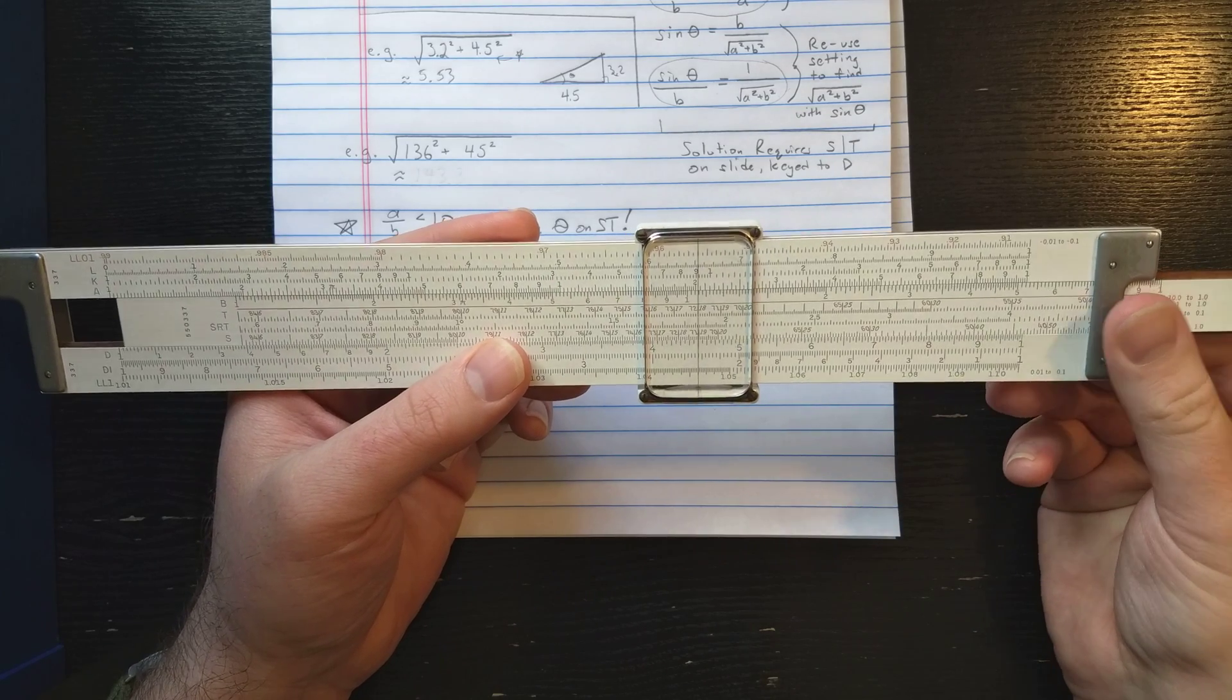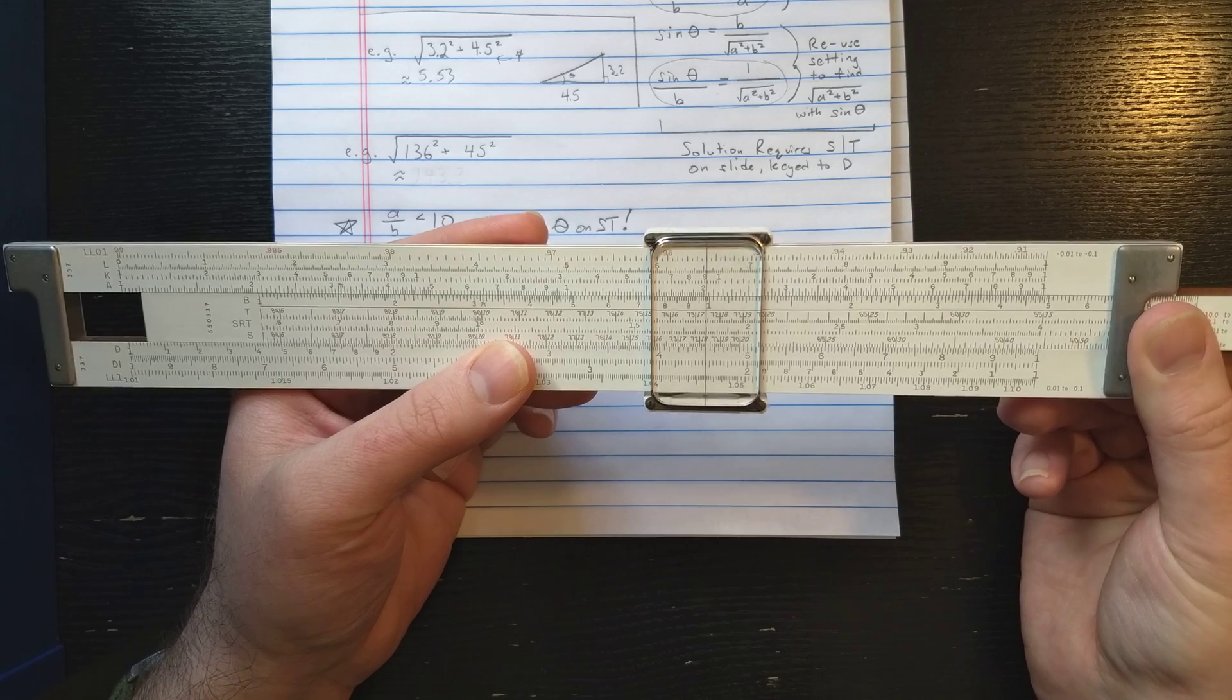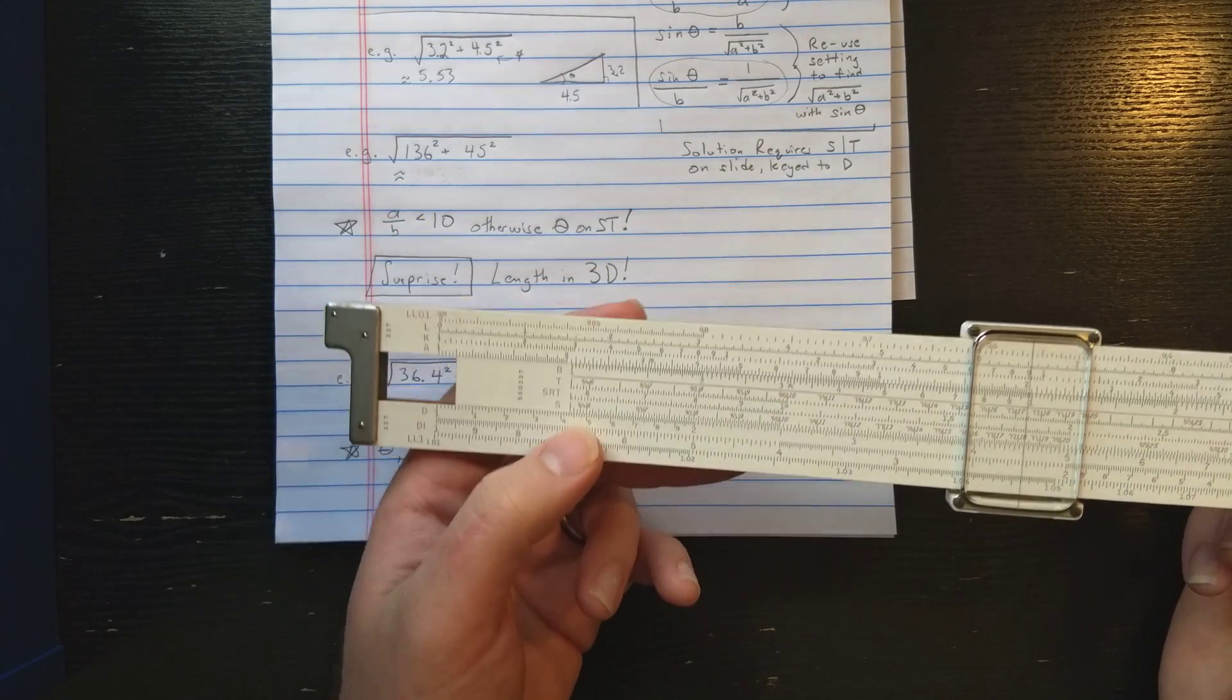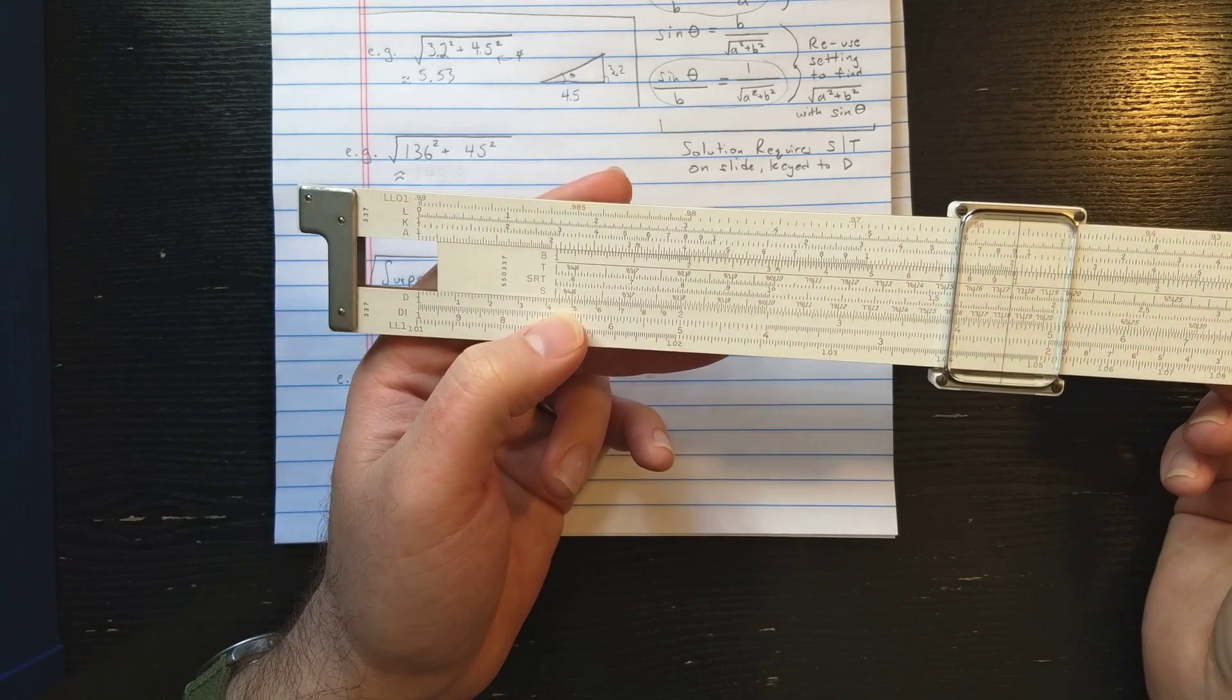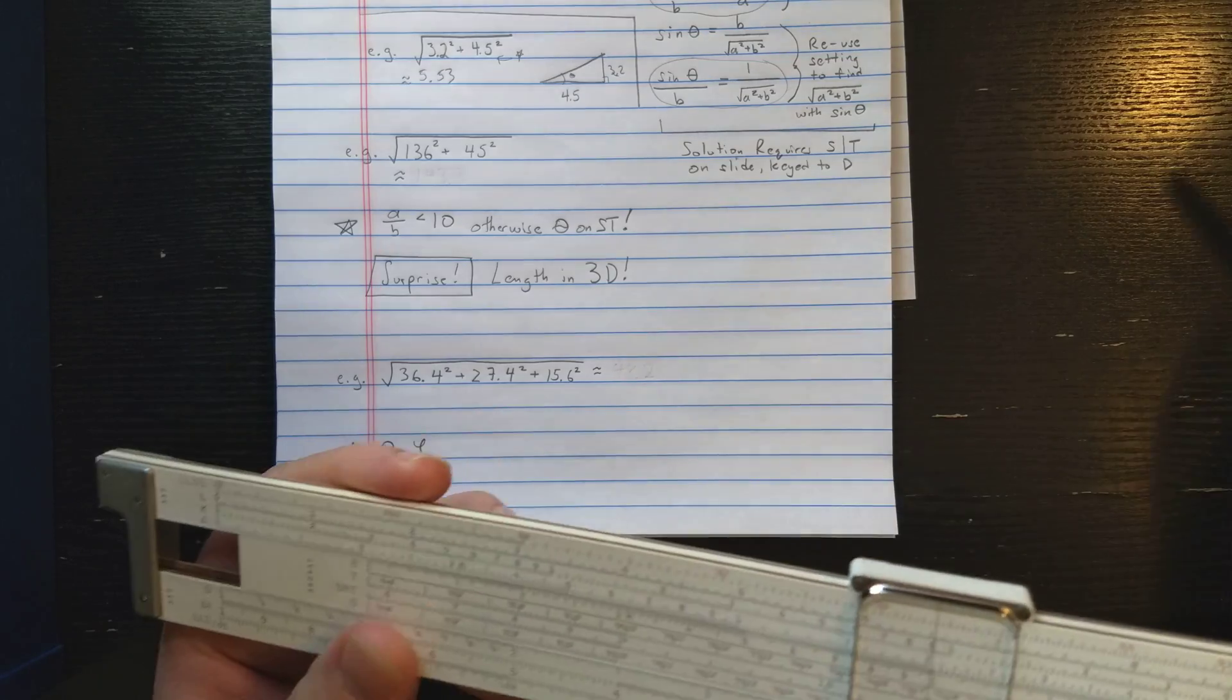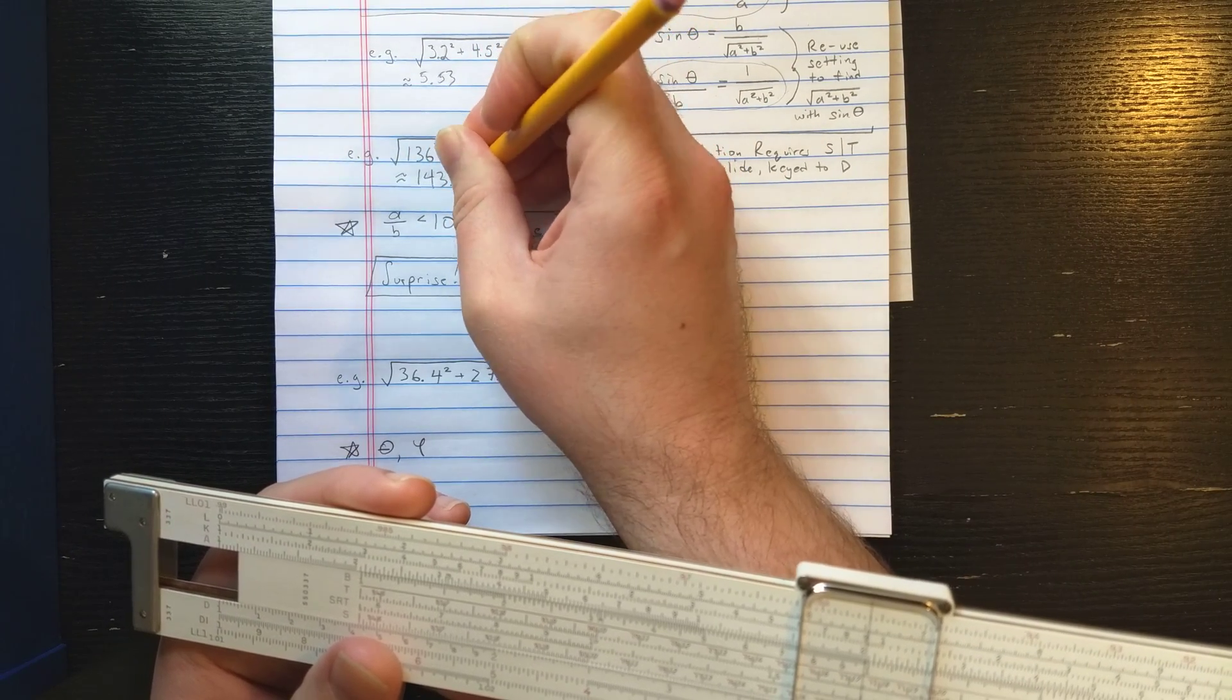I want to move the slide so 18.3 is under the hairline on S. Then I should read here under the index on the D scale. The result looks like about 143.3.